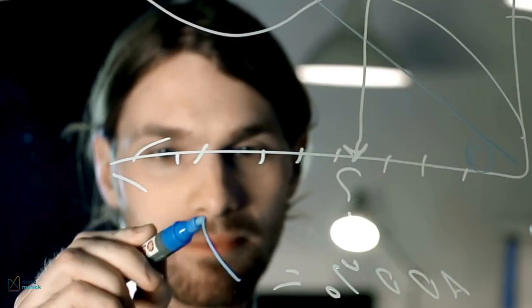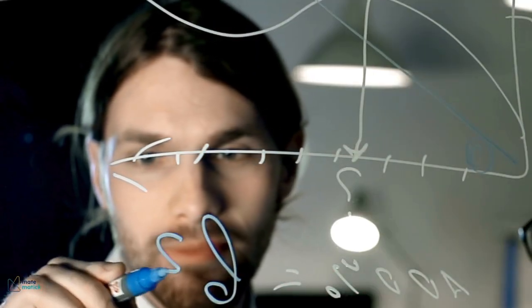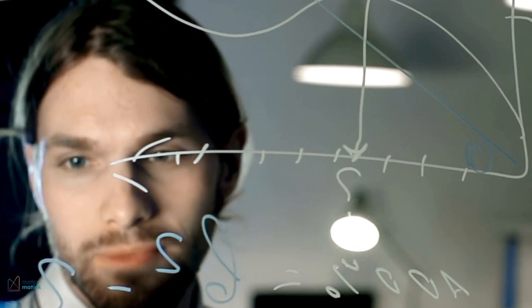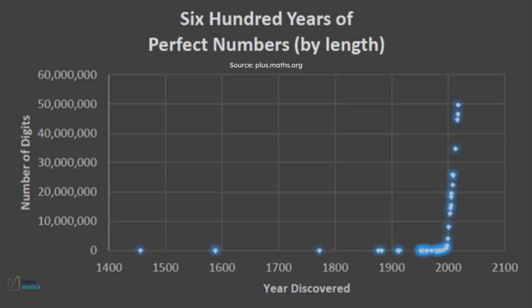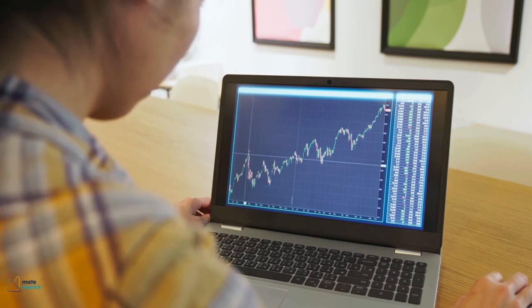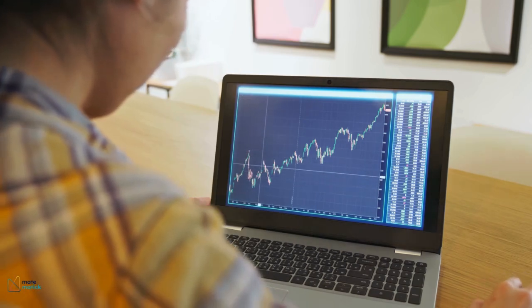Modern mathematicians and computer scientists continue to search for new perfect numbers. The largest known perfect number has millions of digits and was discovered using advanced computer algorithms. These large perfect numbers often have applications in fields such as cryptography and number theory.